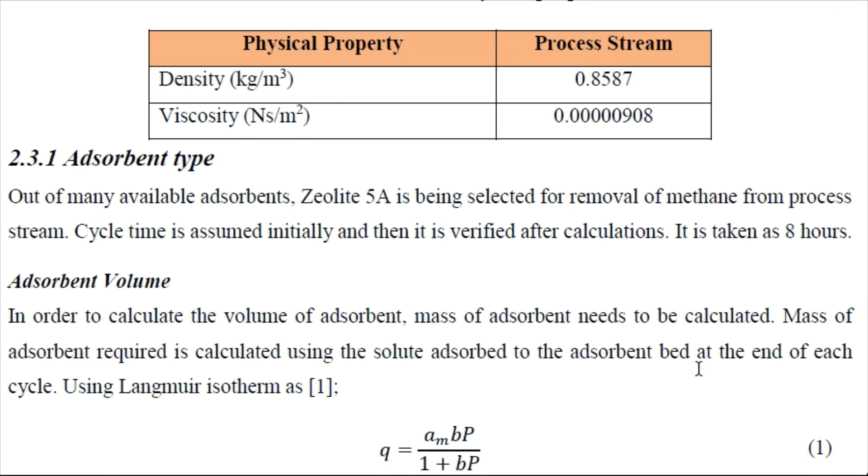Then we finalize the adsorbent type that is taken as zeolite 5A for methane removal in this case. And we also assume initially the cycle time that is taken as 8 hours here in this particular case. But on later stages we will verify that if our assumption is good or not.